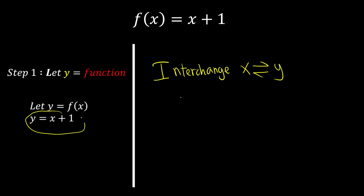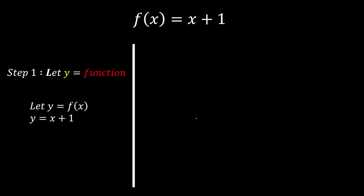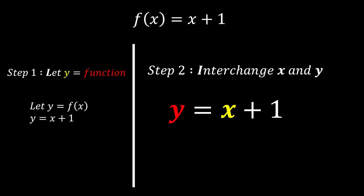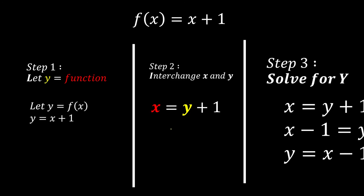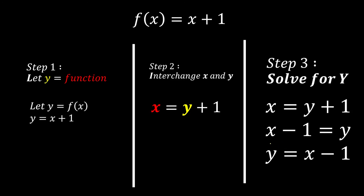Starting with y = x + 1, after the interchange step we get x = y + 1. These are the new equations. The final step Y means solve for y. Moving the +1 to the left side gives x minus 1 = y, so y = x minus 1. We rearrange so that y is the subject.